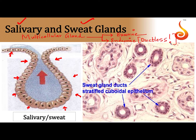Some secretions of the exocrine glands include saliva, which is secreted by exocrine multicellular glands, sweat secreted by the exocrine gland, and digestive juices in your stomach such as gastric juice.